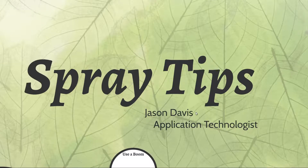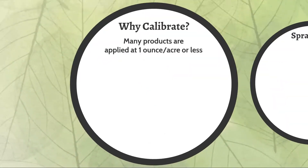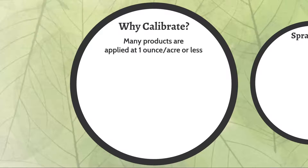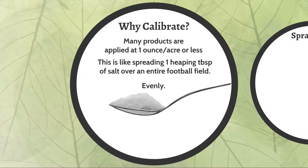So why calibrate? A lot of chemistries, particularly the insecticides on those sheets sent out earlier, go out at a rate of one ounce per acre or less — even a half ounce for some of them. That's the equivalent of taking a heaping tablespoon of salt or sugar and spreading it over an entire football field evenly. Imagine doing that without spray equipment. You can see how that falls apart quickly with clogged nozzles, incorrect speed, not enough water in the tank, or wind blowing too hard.